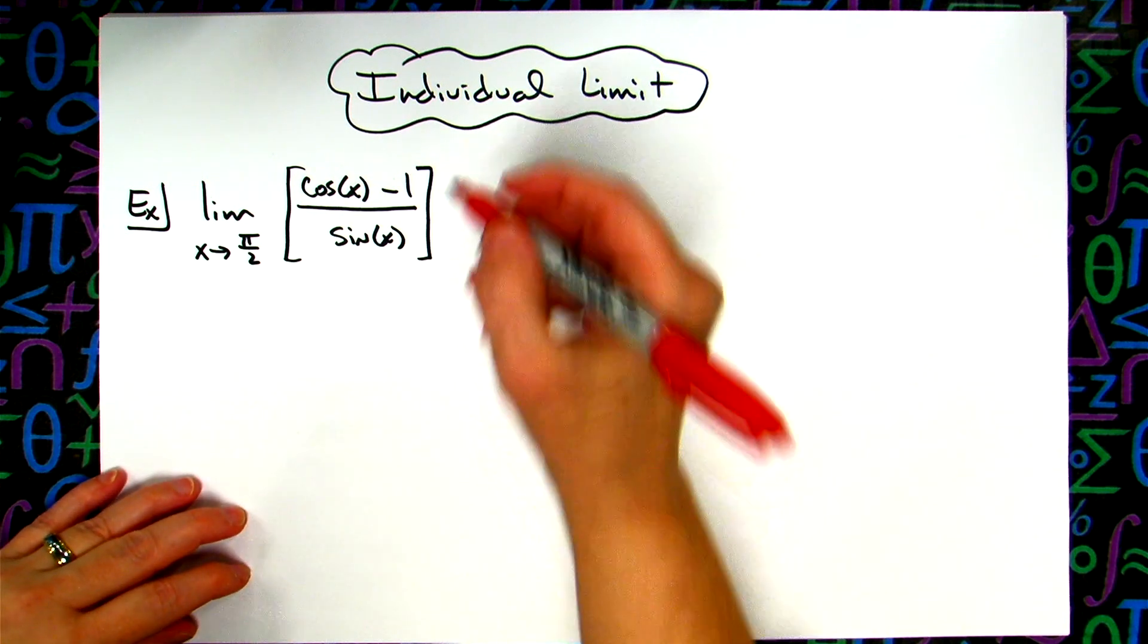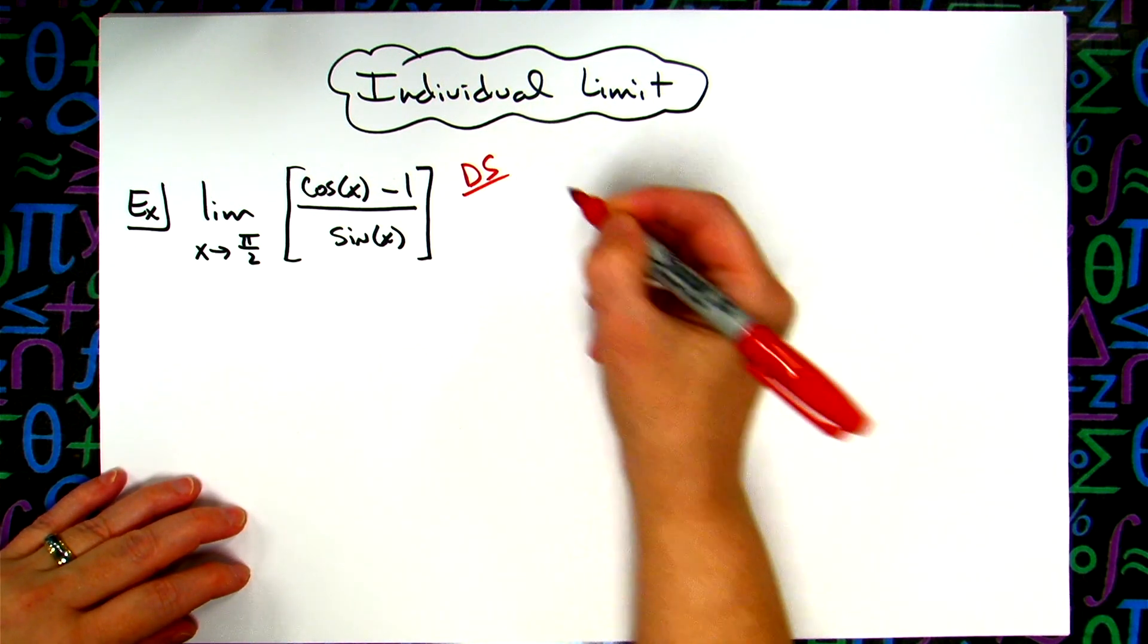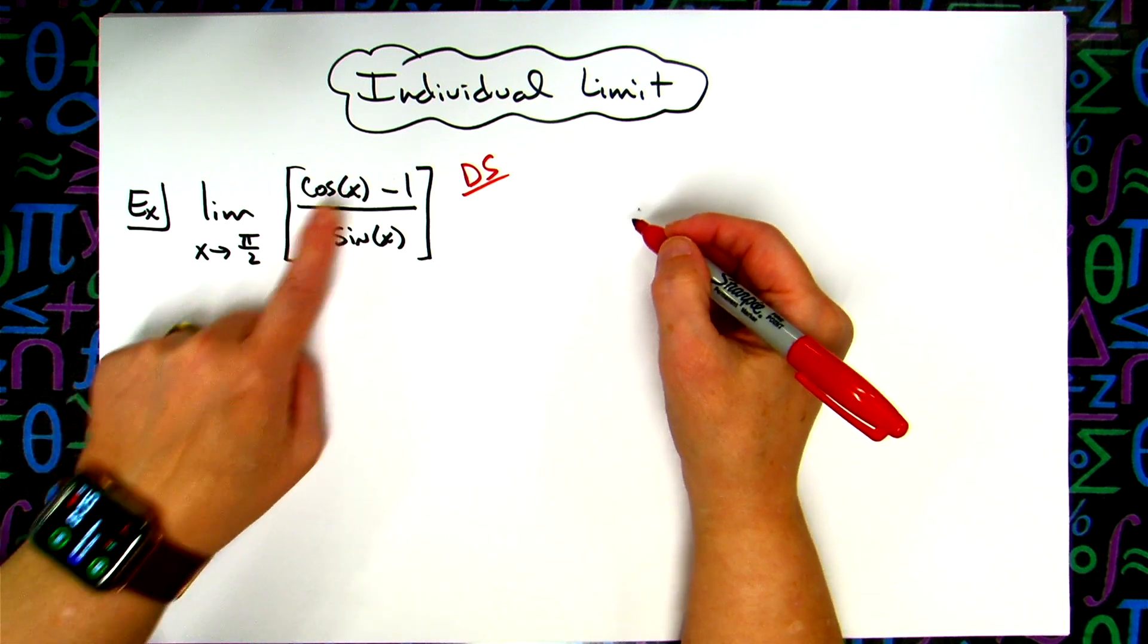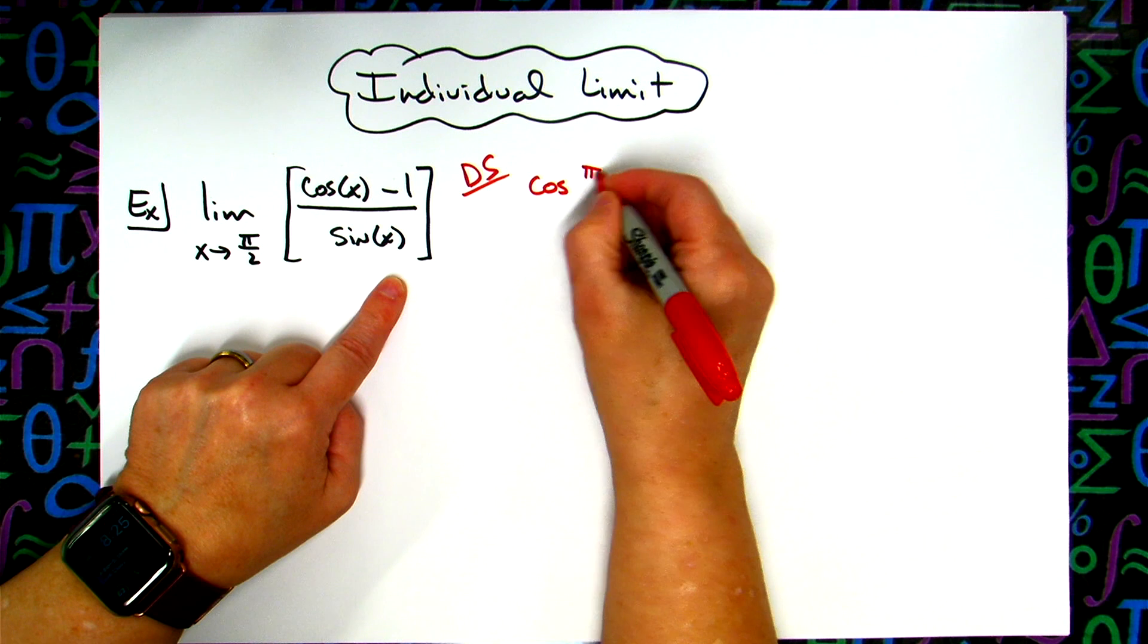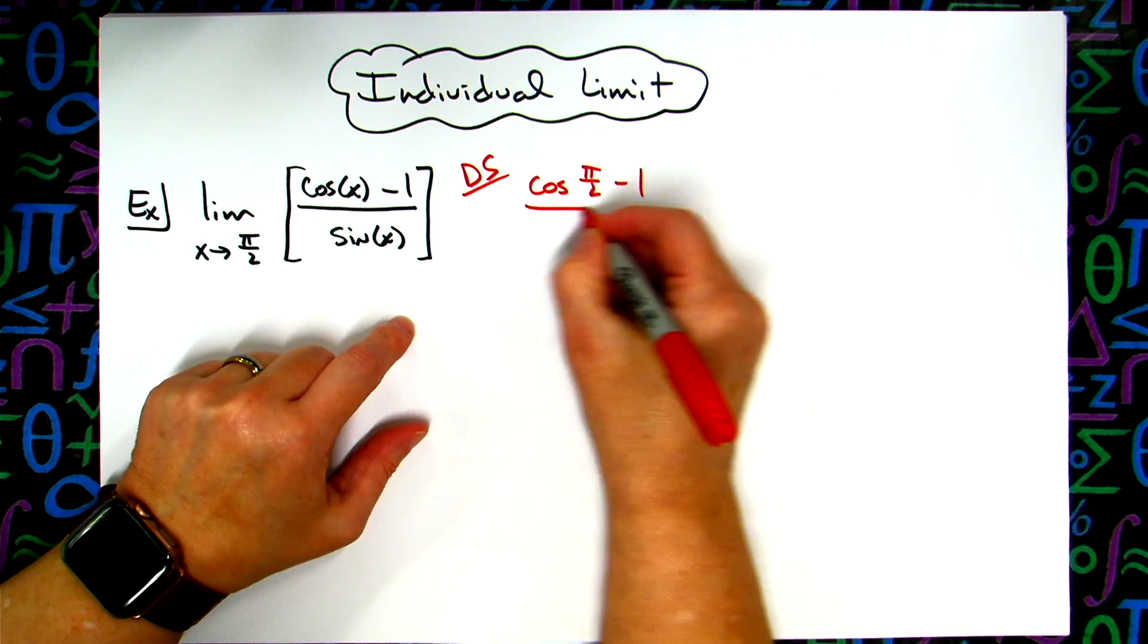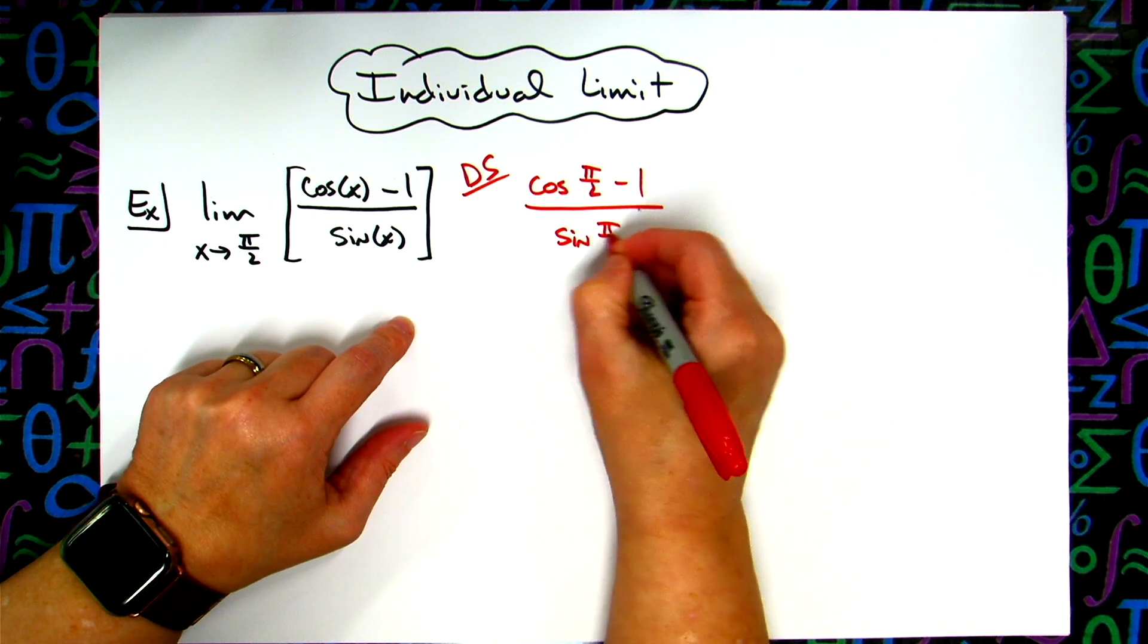So we are going to look here at a direct substitution. I'm going to take my pi over 2 and plug it in. So I will have cosine of pi over 2 minus 1 all over sine pi over 2.